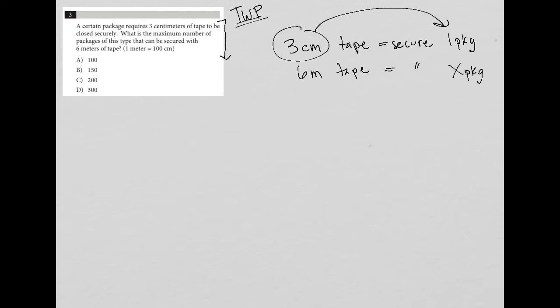We have three centimeters being related to one package. So I'm going to write that as a fraction, so 3 over 1 is equal to 6 over X. As I pay closer attention here, I actually do need the units because the units are different for both. The units for the six is meters, whereas the unit for the three is centimeters. So I cannot complete this proportion until I have the same unit for my numerator.